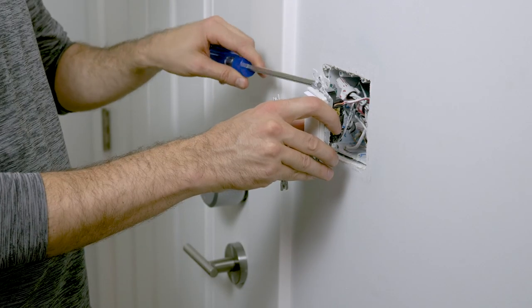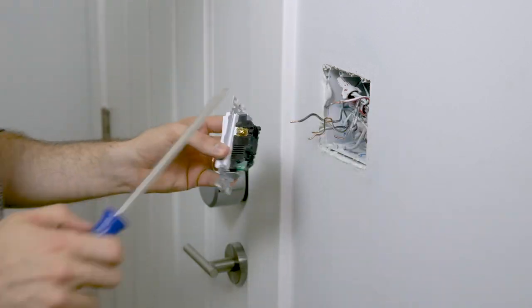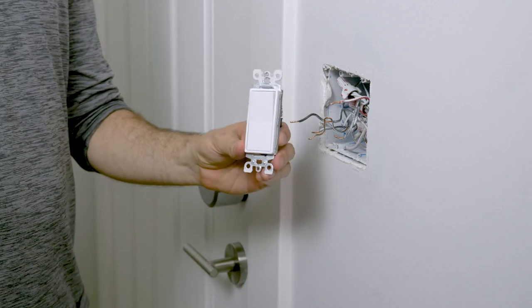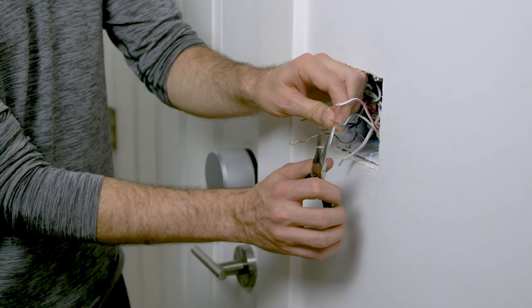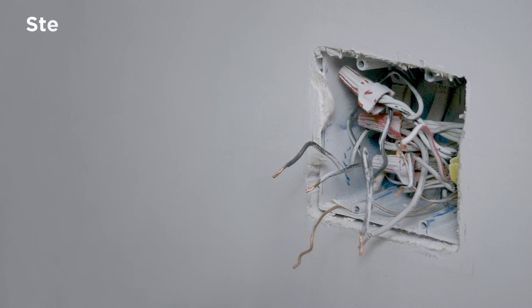I'm going to unscrew the wires. With the switches free of wires I can now set the old switches aside. Straighten the wire ends with your needle nose pliers. Now I have all the wires and can identify which wires are which.